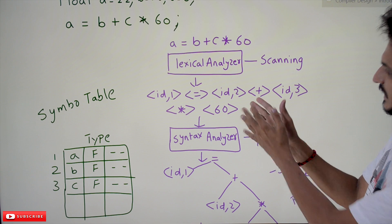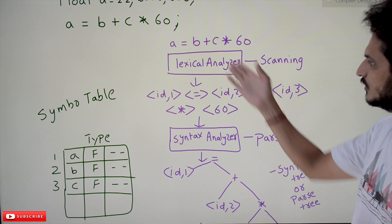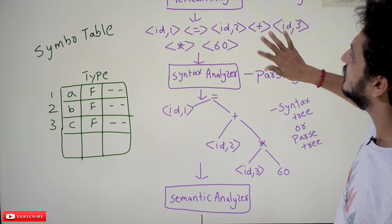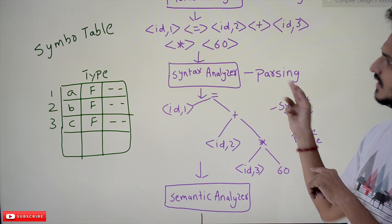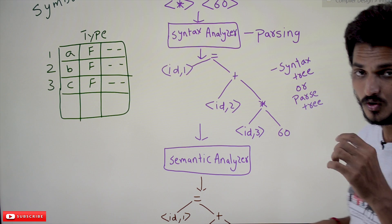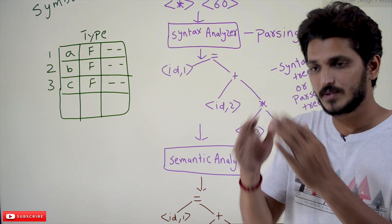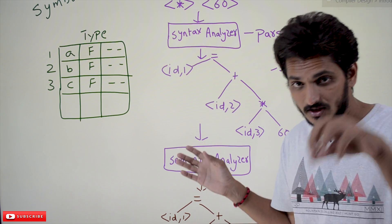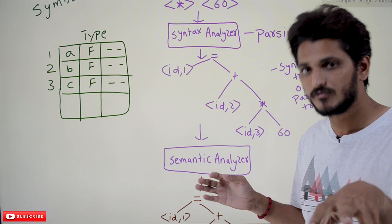That is what the lexical analysis phase does — the lexical analyzer separates the input into tokens. How it does this will be explained in our next classes. These tokens are then given as input to the syntax analysis phase, also called the parsing phase. It takes these tokens and generates a syntax tree or parse tree. We already know about parse trees from theory of computation — we use context-free grammar to generate derivation trees. If you don't have any idea about parse trees, please watch those theory of computation videos first.